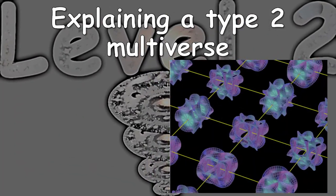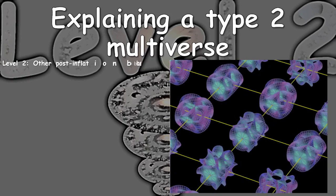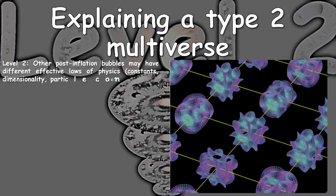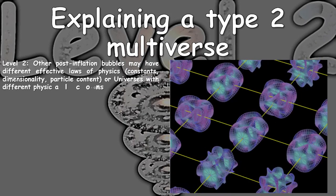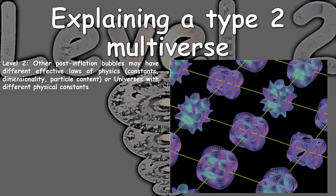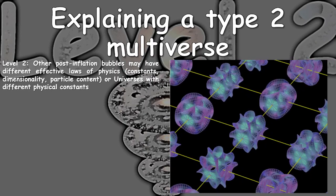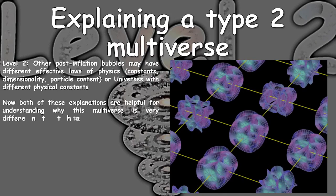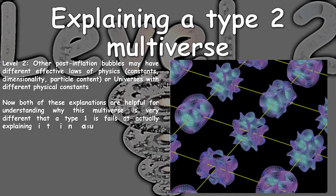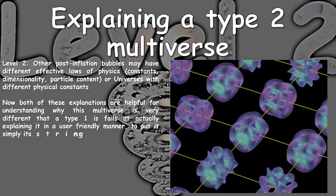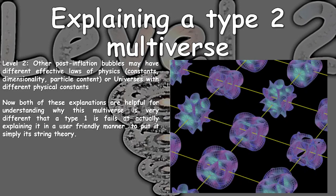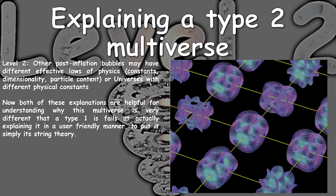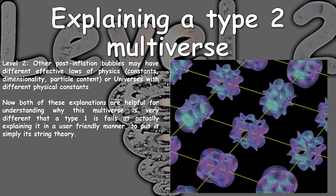Now let's explain a Type 2 multiverse. Level 2: other post-inflation bubbles may have different effect laws, constraints, dimensionality, or particle content — or universes with different physical constants. That description is very well explained for people who are scientific, as you know what the difference between a Type 1 and Type 2 multiverse is based on their properties. However, it doesn't explain very much to the average viewer.